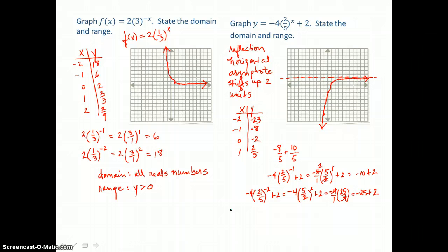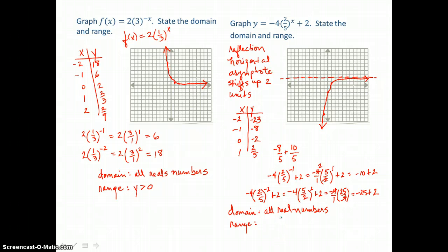So domain is going to be all reals again. X can be any real number. But the range, since there is an asymptote that this curve approaches, and it's below that asymptote, y is always going to be less than 2.